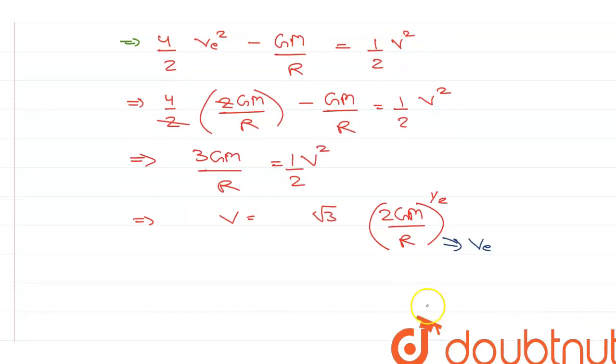So the final velocity of the object is V equals root 3 times V escape.